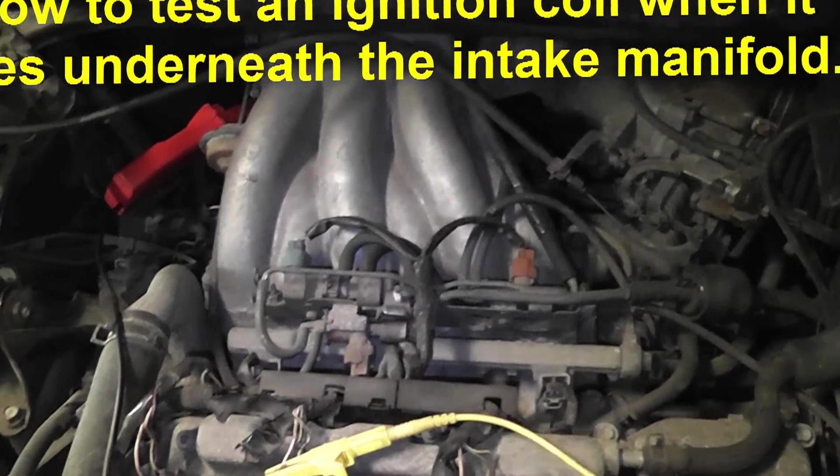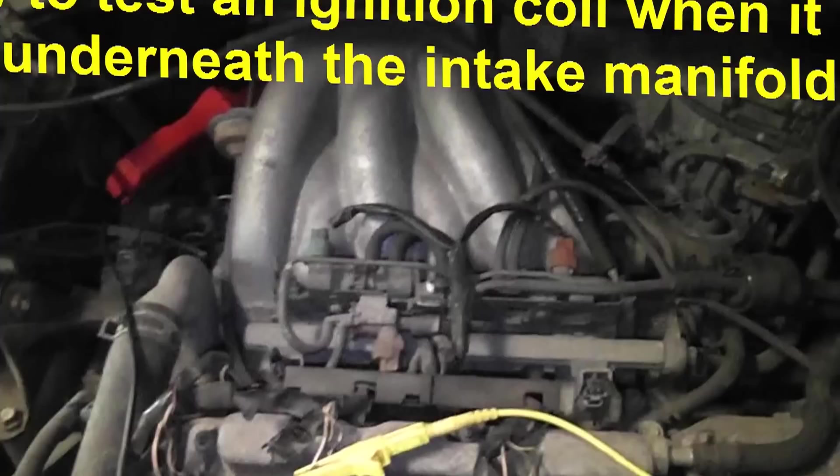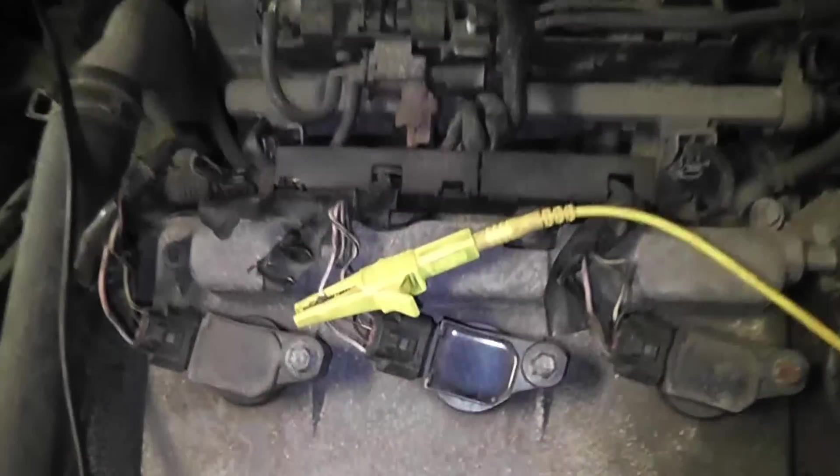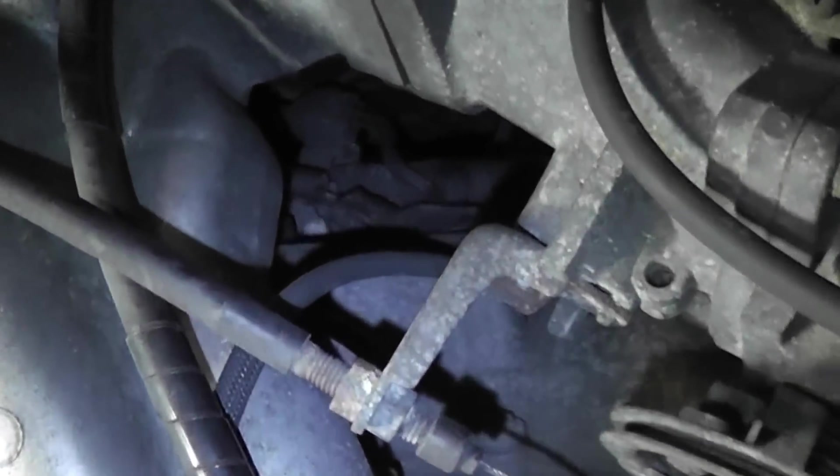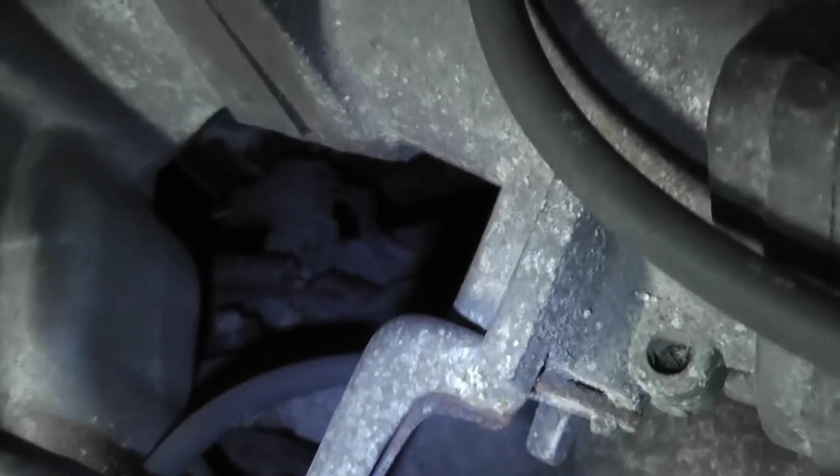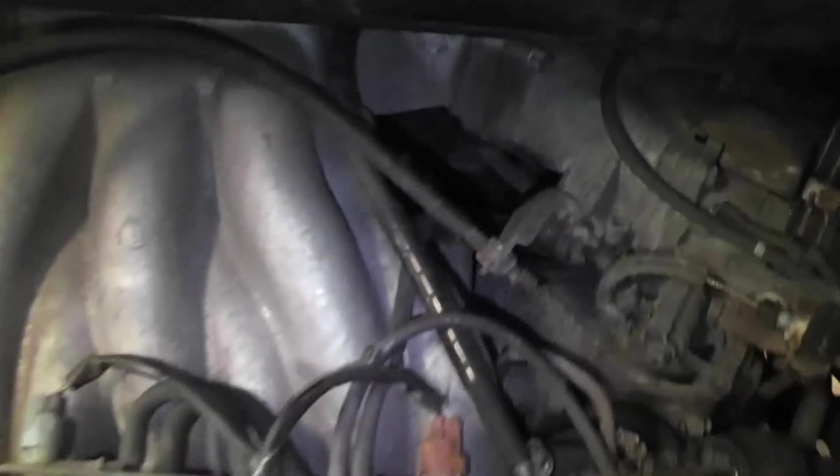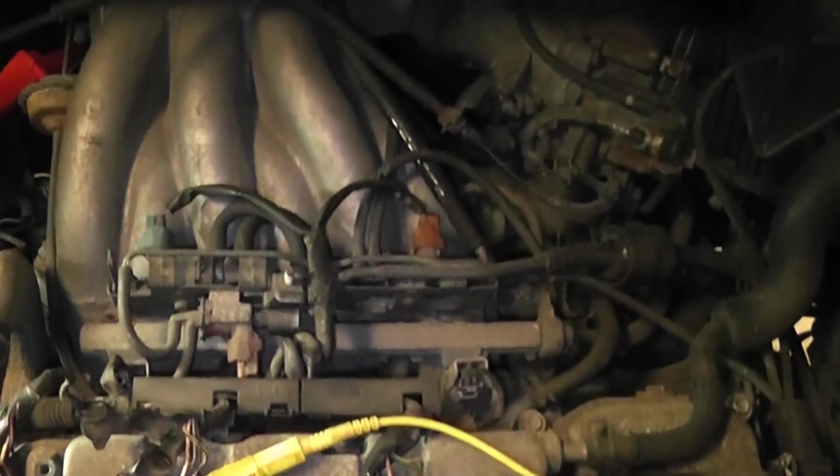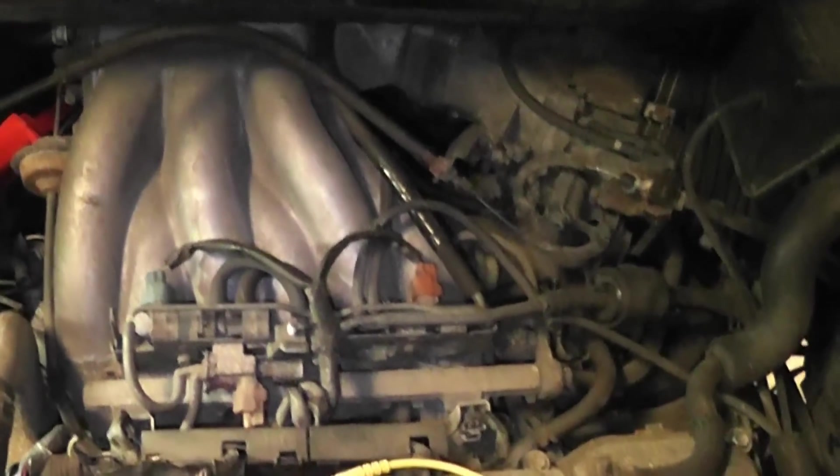2000 Lexus RS 300, we got a cylinder number 5 misfire. Unfortunately on this coil-over-plug design, cylinder number 5 lives in hell, way back underneath the intake, and I can't really get to any of the wires going to it. So we're having trouble trying to figure out what our misfire is from.